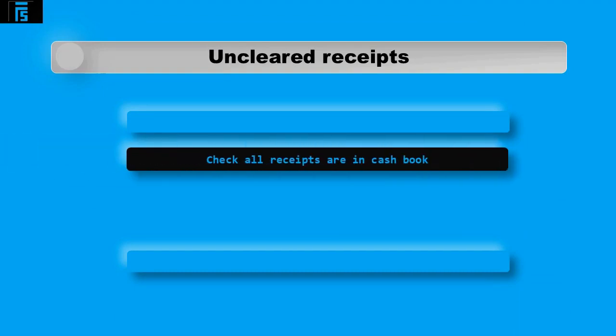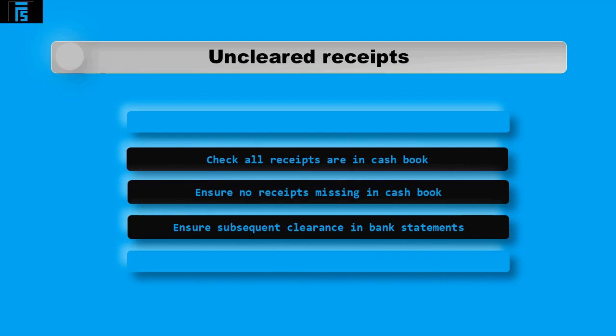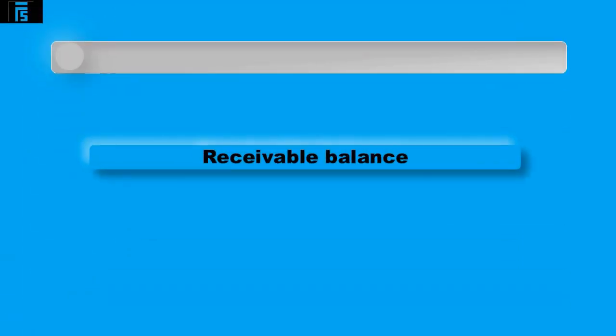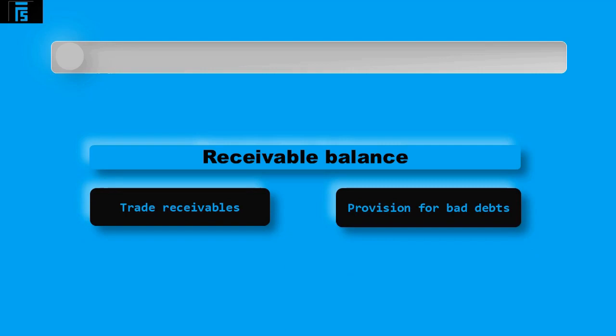Any uncleared receipts would also be audited — agreeing that all uncleared receipts on the bank reconciliation are in the cashbook, ensuring no missing receipts, and inspecting bank statements after the year end to ensure receipts have now cleared.